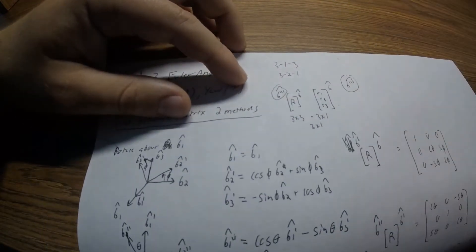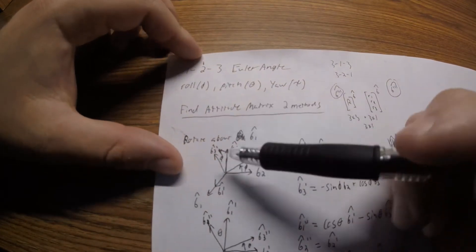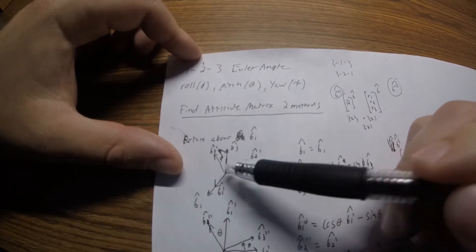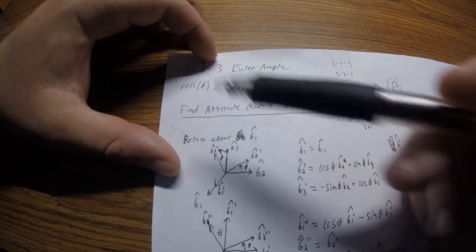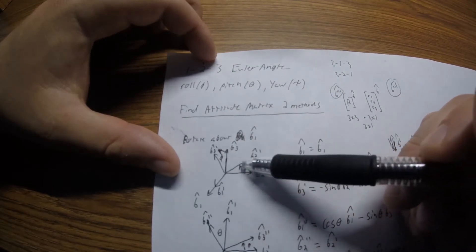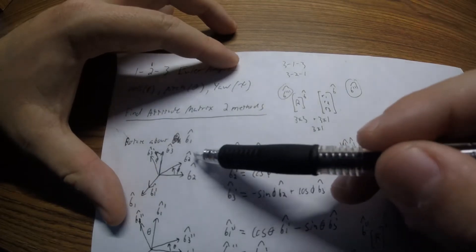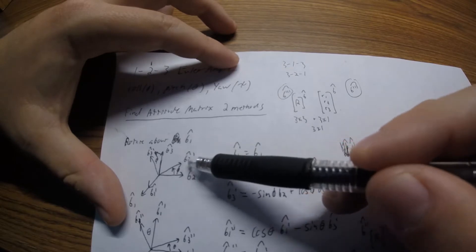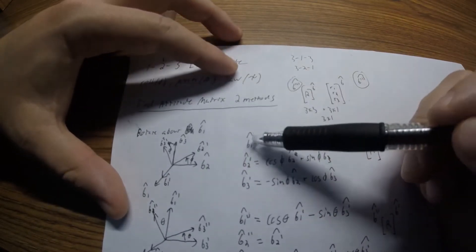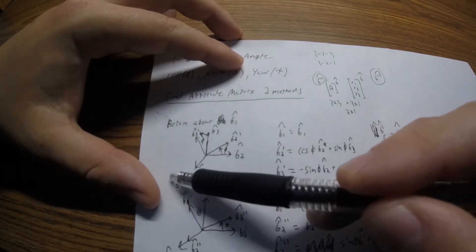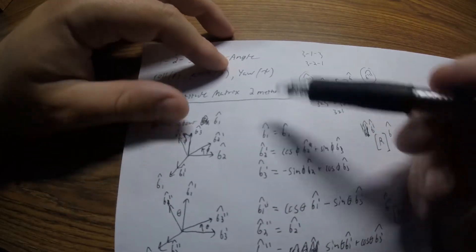We have a 1-2-3 rotation sequence. The 1 means our first rotation is going to be about the first axis. If this was a 3-1-3 rotation, the first rotation would be about the third axis. Because we're doing 1-2-3, the first rotation is about the first axis, rotating by angle phi — a roll value of phi. Our first intermediate frame is B prime. B1 prime is just the same as B1, because we're rotating about that axis, so B1 prime is represented as B1.